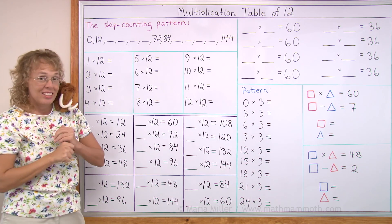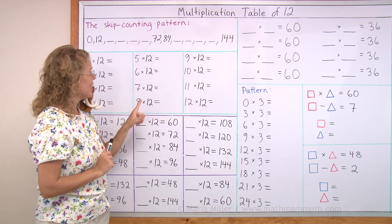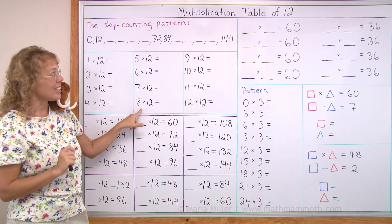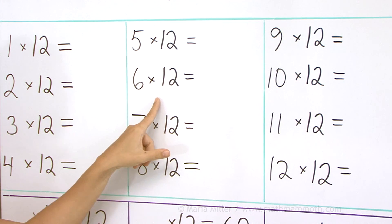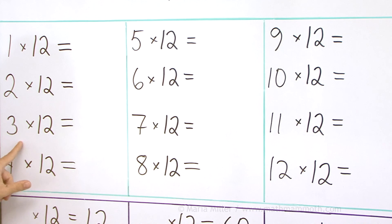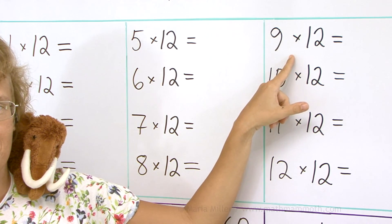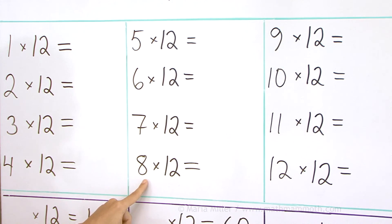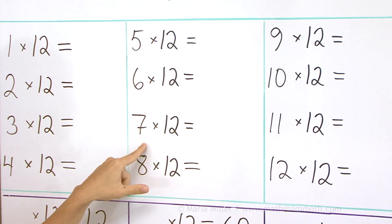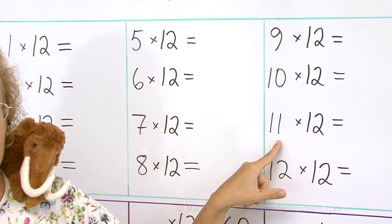But now let's get ready for the drill. What is 10 times 12? 120. 8 times 12? 96. 12 times 12? 144. 6 times 12? 72. 3 times 12? 36. 5 times 12? 60. 9 times 12? 108. 8 times 12? 96. 7 times 12? 84. And 11 times 12? 132.